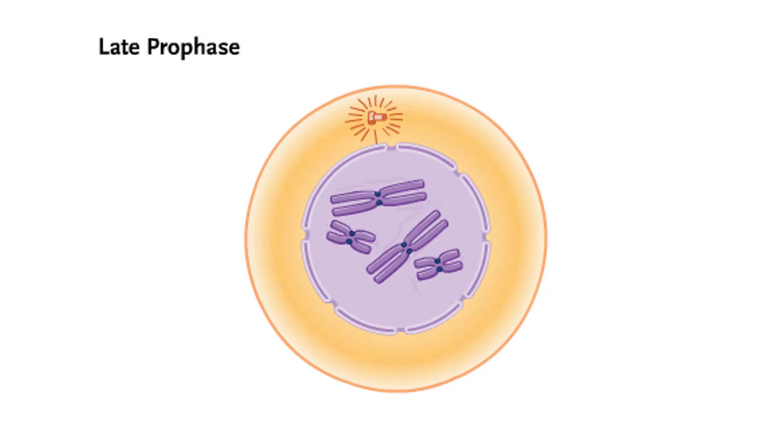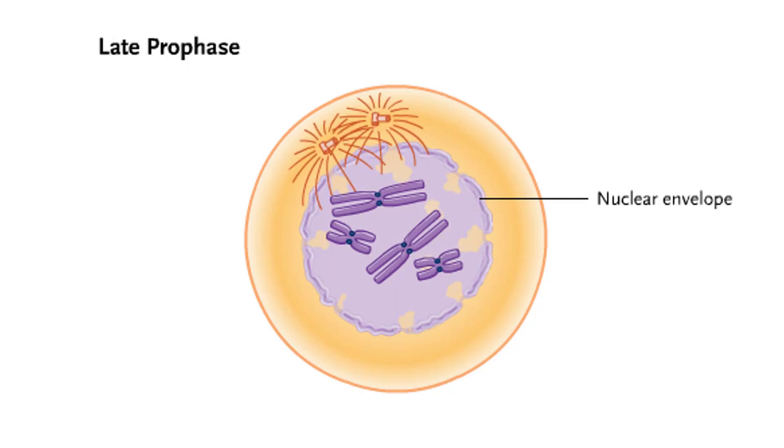Chromosomes continue to condense. New microtubules assemble and move one of the centriole pairs to the opposite side of the cell. The nuclear envelope begins to break up.